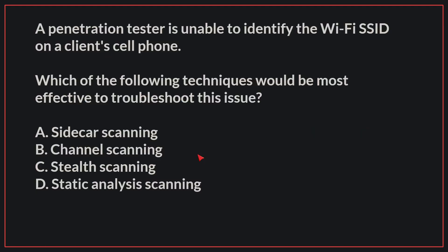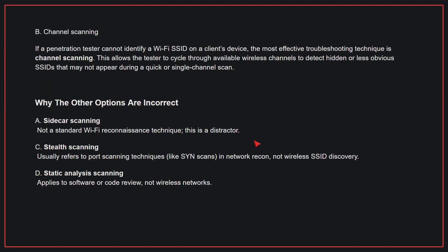Therefore, the correct answer is D. A penetration tester is unable to identify the Wi-Fi SSID on a client's cell phone. Which of the following techniques would be the most effective to troubleshoot this issue? The correct answer is B, channel scanning. If a penetration tester cannot identify a Wi-Fi SSID on a client's device, the most effective troubleshooting technique is channel scanning.